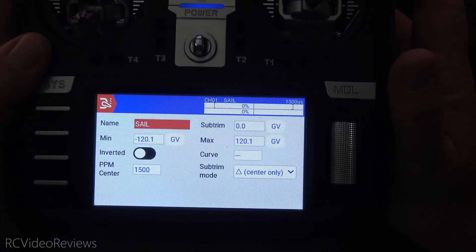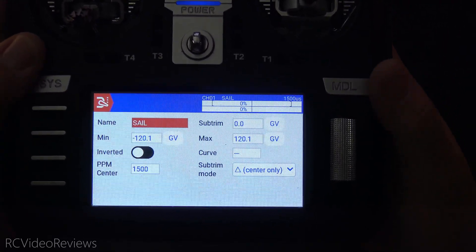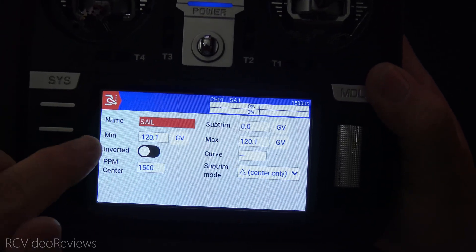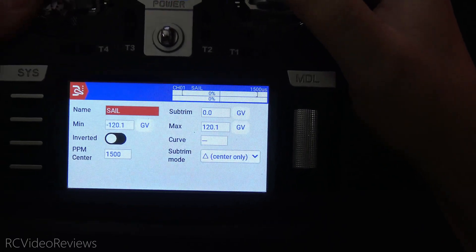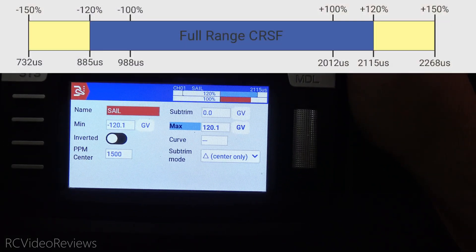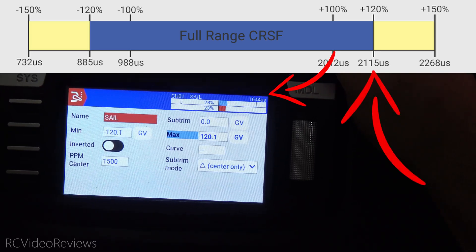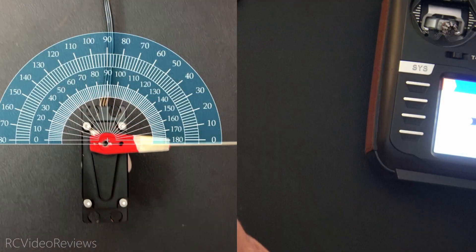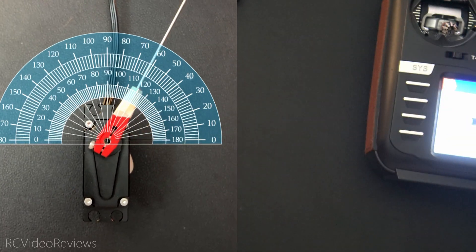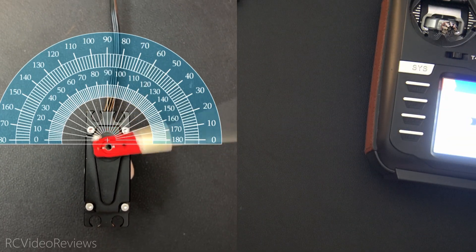Okay. This time we're looking at the X20 4208. And on the radio on my outputs page, I've got my min and max set to negative 120 and positive 120 respectively, and that gives me the limits of CRSF as a protocol at 2115 microseconds and 885 microseconds. Next thing we'll do is put the protractor above the servo, and we'll run this out to its full extent, and we'll see what we get.